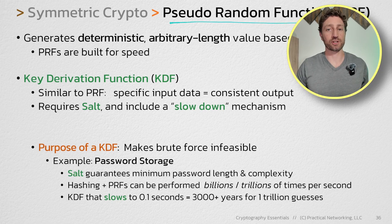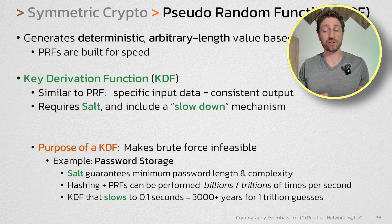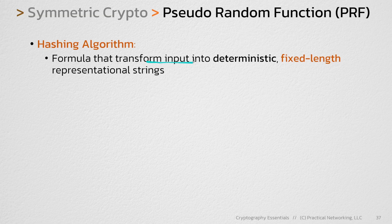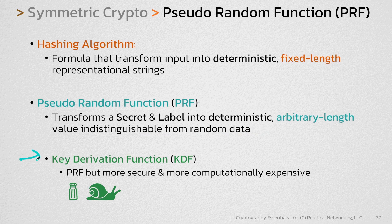So that's our lesson on pseudo-random functions. In our discussion, we talked about three different things: hashing, pseudo-random functions, and KDFs. A hashing algorithm transforms input into deterministic fixed-length representational strings. A pseudo-random function does the same thing, but the input is a secret, a label, and a number of bits, and it turns that into deterministic arbitrary-length output that is indistinguishable from random data. And finally, a KDF is the same thing as a PRF, but it also includes salt and an intentional slowdown mechanism, making it a more secure but more computationally expensive version of a PRF.